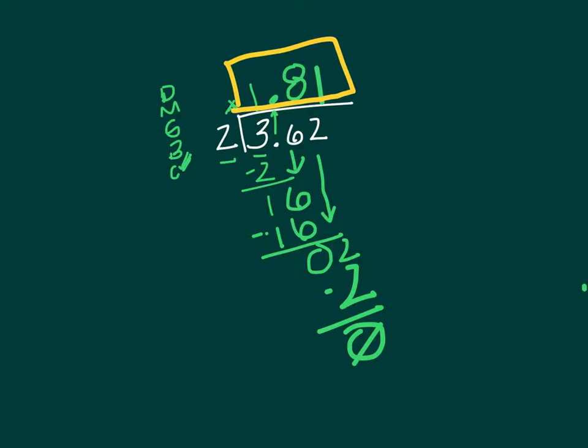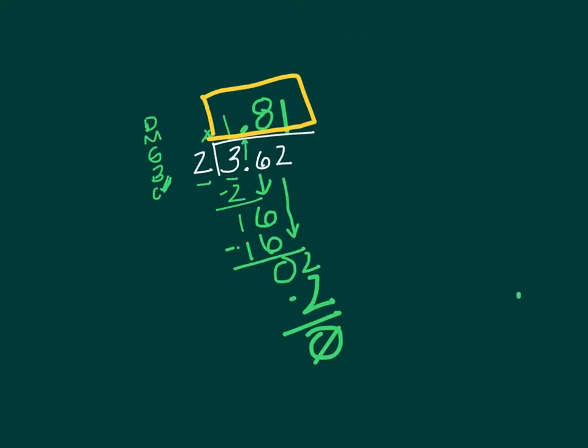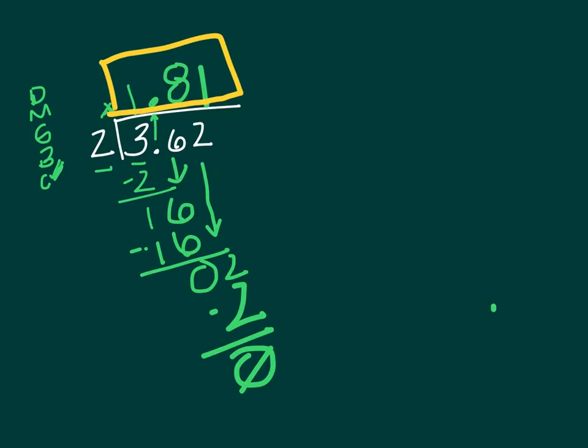Wrong, because it's not our answer until we check it. So let's scooch next door and give this a check. We're gonna multiply 1 and 81 hundredths times 2, and we should get right here we should get this as our answer.